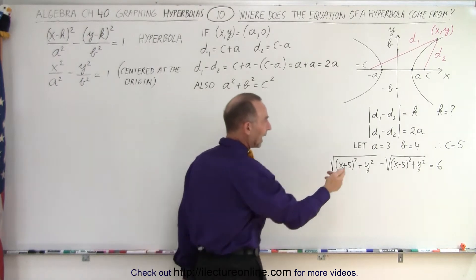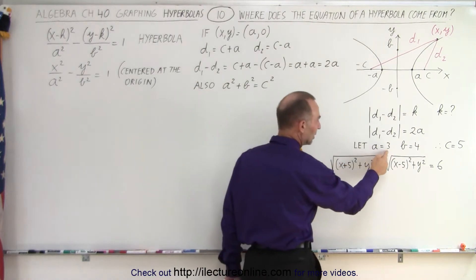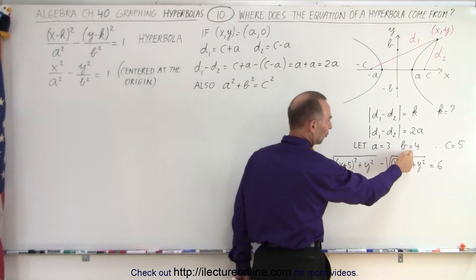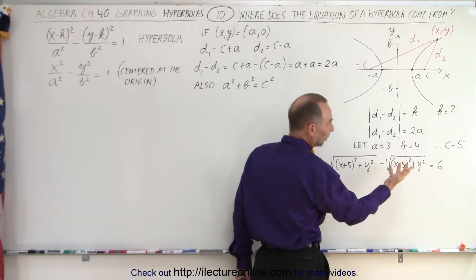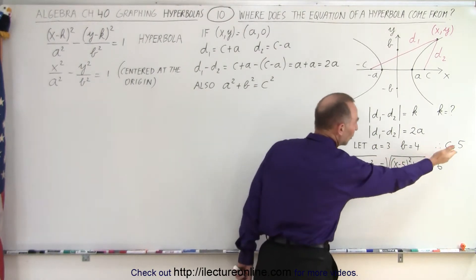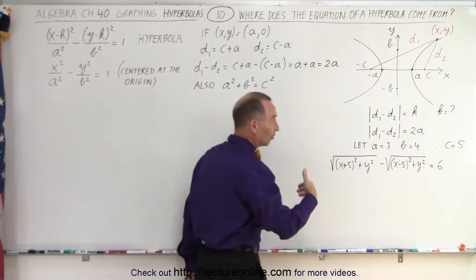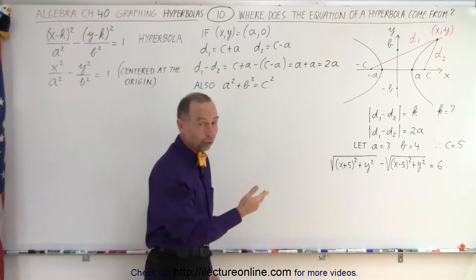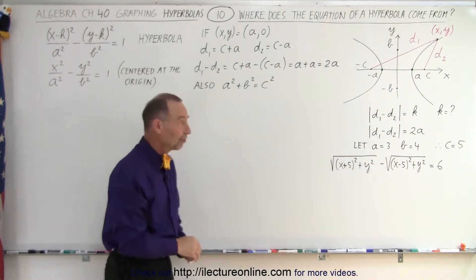We can use the equation A squared plus B squared equals C squared. So in the case where we let A equal 3 and B equal 4 as an example, then C will be 5 because 3 squared plus 4 squared equals 5 squared.